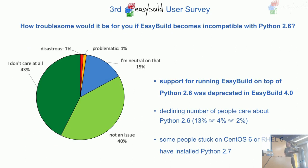We asked how concerned people are with EasyBuild dropping support for Python 2.6, which is 15 years old. We're now at the level where only 2% of people say it's problematic. We've deprecated Python 2.6 support in EasyBuild 4.0/4.1 — you'll now get a warning if running EasyBuild on Python 2.6. This was made before the survey and it seems we anticipated things well. This is probably still the people stuck on CentOS 6 who haven't updated to Python 2.7.